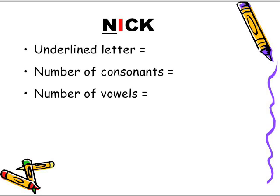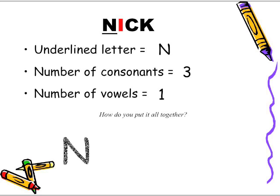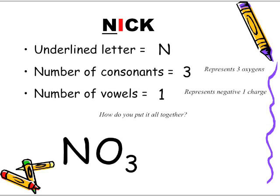"Nick" — the underlined letter is N. How many consonants does the word "Nick" have? It has three. How many vowels? One. So we start with N for nitrogen; three consonants means three oxygens, giving us NO3. One vowel means a negative one charge. So NO3 with a negative one charge — we read this as nitrate.